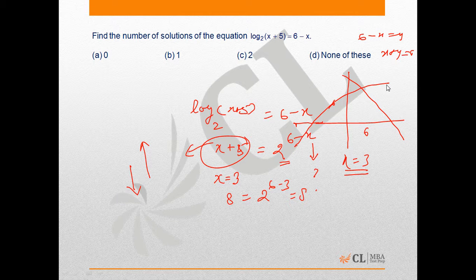So from the graph it can be seen that there is only one point of intersection of the two graphs, which means there is only one solution of the equation. Therefore option B is the correct answer.